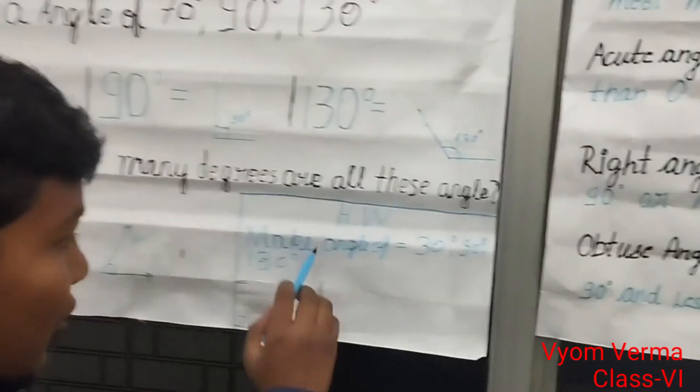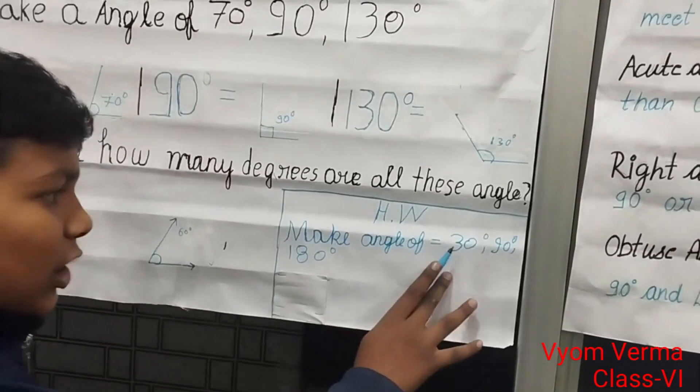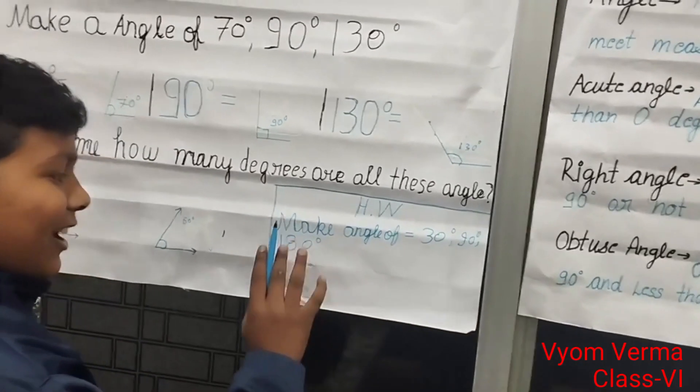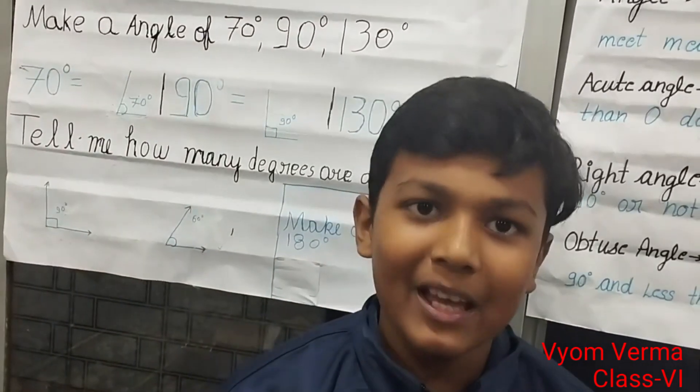Thank you. Your homework is to make angles of 30 degrees, 90 degrees, and 180 degrees. Thank you. Bye bye. Happy learning.